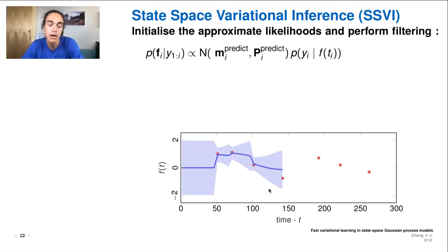So that was the outline of how the algorithm works. But now we're going to do a toy example so we can show you in practice how we would perform the state space variational inference within a Kalman filter, Kalman smoother framework. So as I said, we're in the Kalman filter step here.